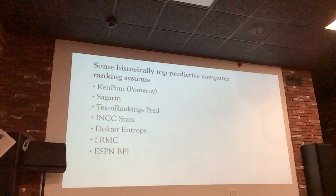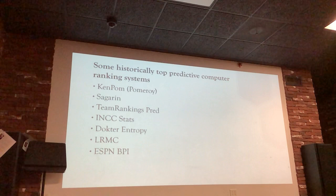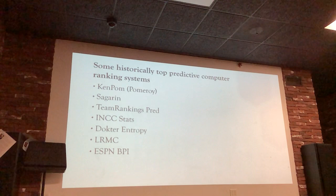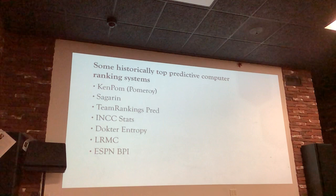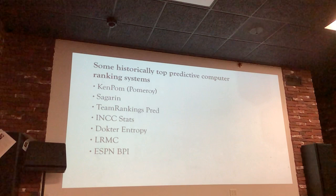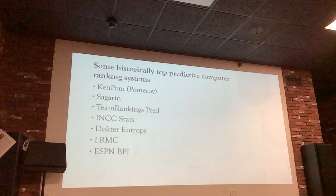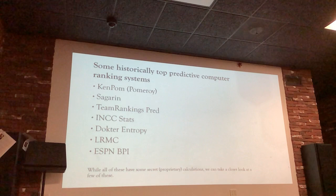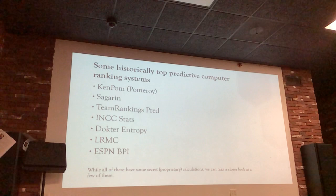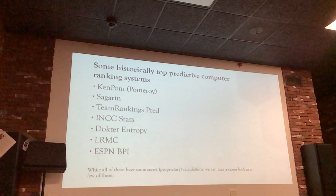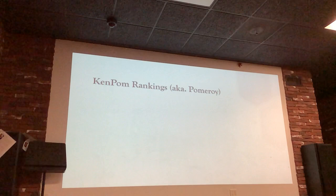I want to highlight the top predictive ranking systems — not just ones good at describing what happened, but predicting what will happen in the tournament. The best historically are: Ken Pomeroy (KenPom), Sagarin (used by USA Today), Team Rankings Pred, InkStats, Dr. Entropy, LRMC, and ESPN BPI. All of these have some secret or proprietary calculations, so we can't know exactly how they're done.